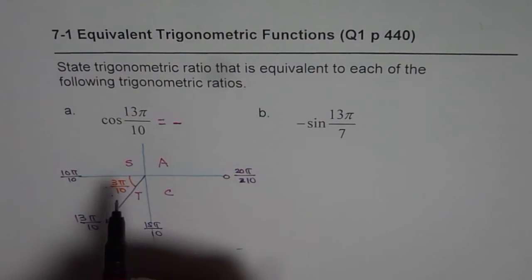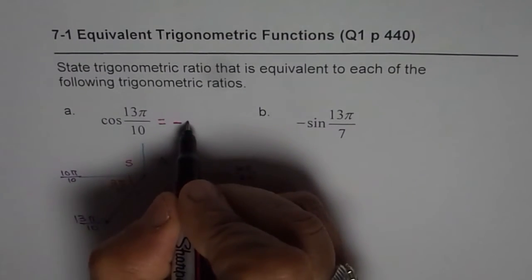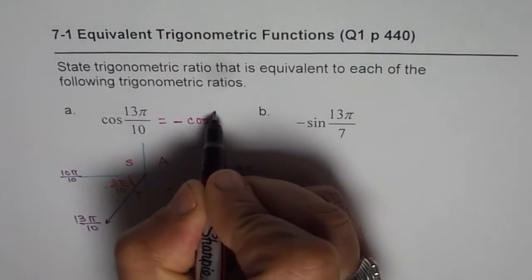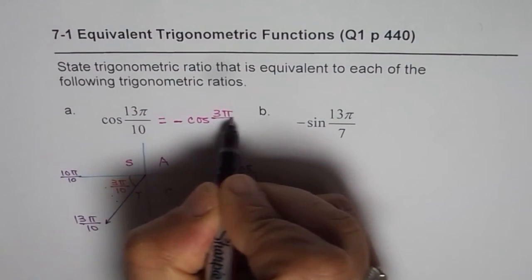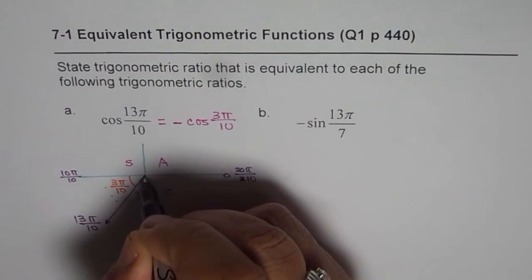Second, what is the acute angle? Acute angle is 3π by 10. So we can write this cos as cos of 3π by 10, right? So that becomes your acute angle. Do you understand?